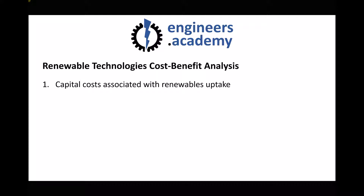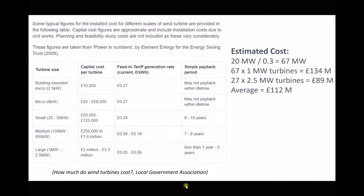In an earlier tutorial we looked at how we could determine the capital cost for both a wind farm and a solar power plant. We looked at some data from the local government association and sized turbines based on two different scenarios, assuming an average output of 20 megawatts. Taking capacity factor into account, we needed a wind farm with a rated power output of 67 megawatts. The two scenarios were 67 one-megawatt turbines or 27 two-and-a-half-megawatt turbines, with costs ranging between £89 million and £134 million. The larger turbines were cheaper due to economies of scale.